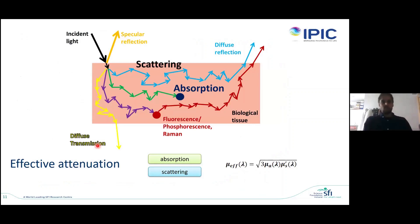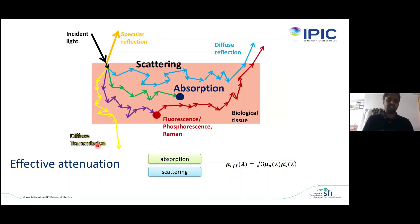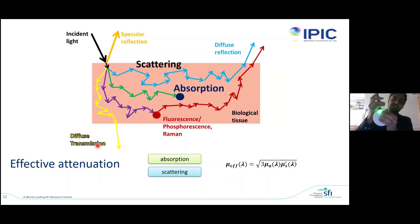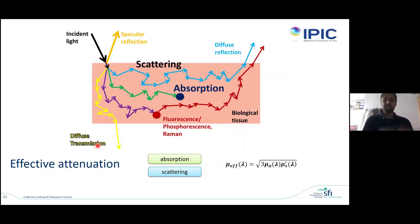Now we are more or less clear on how scattering and absorption work in a diffusive medium and why we need to learn them. We can define one more term: effective attenuation. Whether you lose light because of absorption or because of scattering, you are losing light regardless. So you can define a new term, mu effective (μ_eff), defined as the square root of 3 times μ_a times μ_s'. Instead of calling them absorption or scattering losses separately, you can simply say effective attenuation.